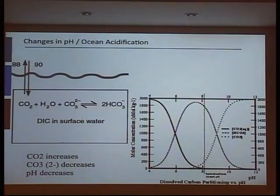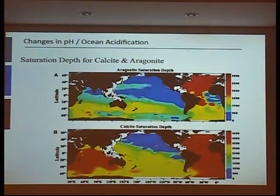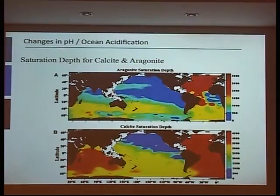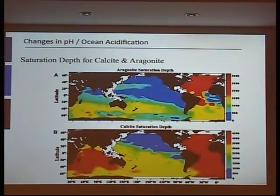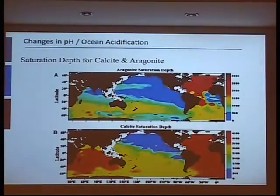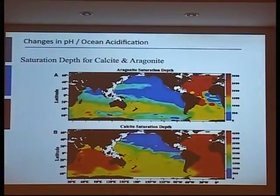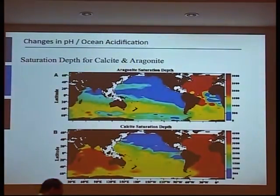A way to examine acidification is through the aragonite saturation horizon. The surface ocean is oversaturated with respect to aragonite and calcite — two forms of CaCO3 — while below the saturation horizon, waters are under-saturated. Increasing CO2 decreases pH, decreases carbonate ion concentration, and shoals the saturation horizon, resulting in a much larger volume of under-saturated waters. In under-saturated waters, shells and skeletons start to dissolve chemically.